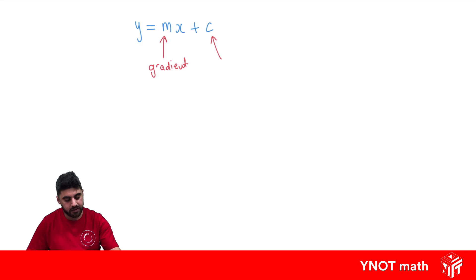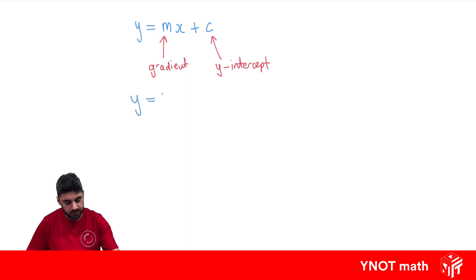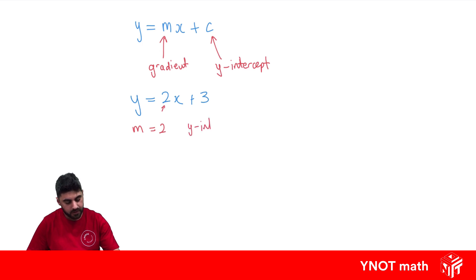The value over here is always the y-intercept. So if we have an equation that was y equals 2x plus 3, straight away we know that the gradient of this line is 2, because that's the value in front of x, and we know the y-intercept equals 3, because that's the value over here by itself.